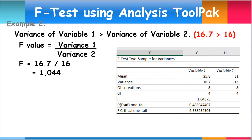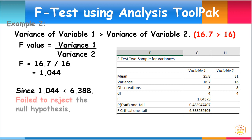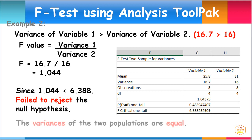The decision rule is: if F is greater than F-critical 1-tail, we reject the null hypothesis. Since 1.044 is less than 6.388, therefore we fail to reject the null hypothesis. Thus, the variances of the two populations are equal.